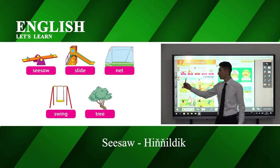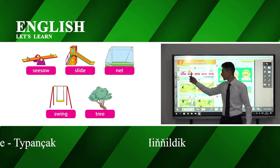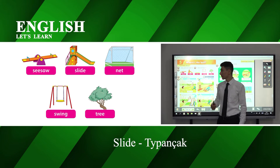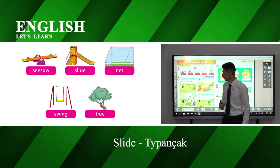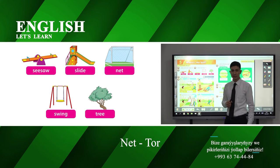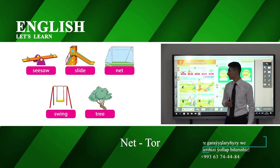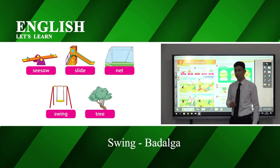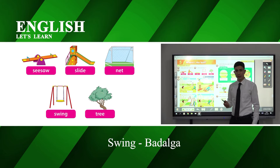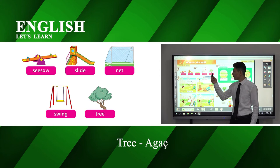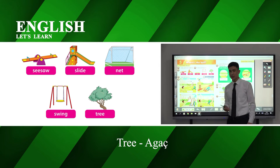Seesaw. Seesaw — Türkmençede 'hingillik' diyemeklilik. Doğa medeliyin, ikinci sözümüz: slide. Slide — 'tı pançak' diyemeklilik. Doğa medeliyin, indiki sözümüz: net. Net — 'tor' diyemeklilik. Doğa medeliyin, indiki sözümüz: swing. Swing — 'badalığa' diyemeklilik. Doğa medeliyin: tree. Tree — 'ağaç' diyemeklilik.